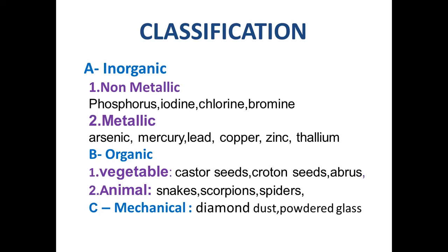Now I come to the classification of irritant poisons. This classification was discussed in general toxicology under the classification of poisons, but here I revise only the classification of irritant poisons. They are divided into three main groups: inorganic, organic, and mechanical. Inorganic irritant poisons are further divided into non-metallic irritants and metallic irritants.